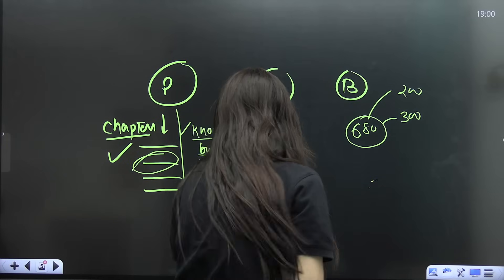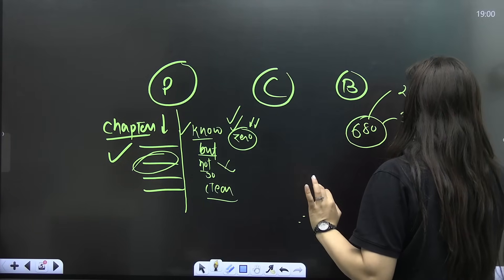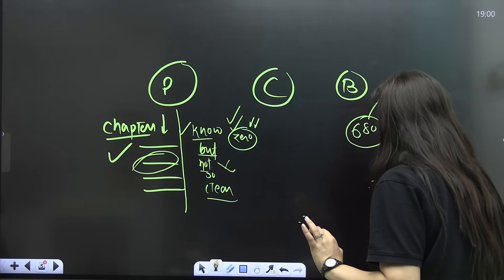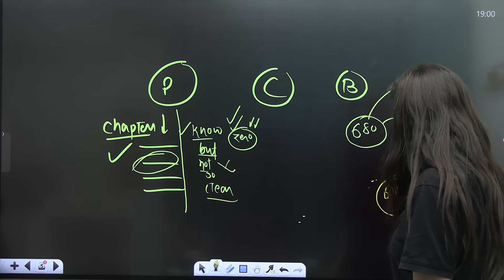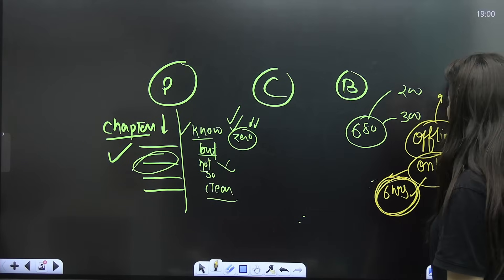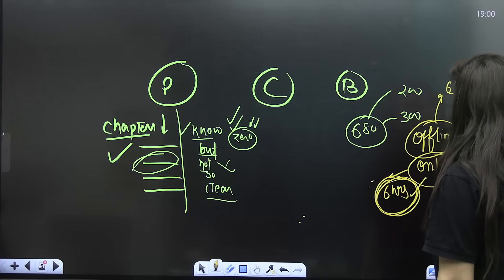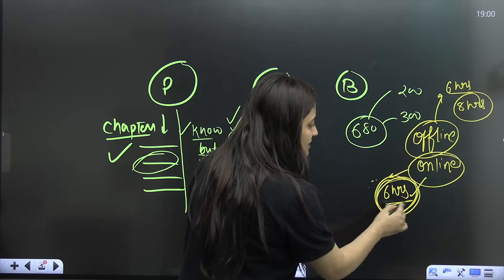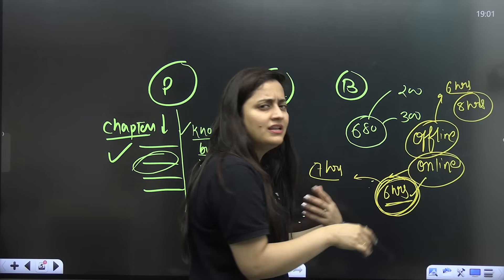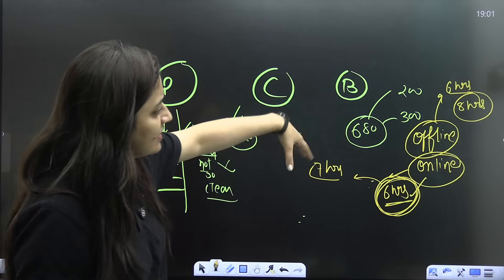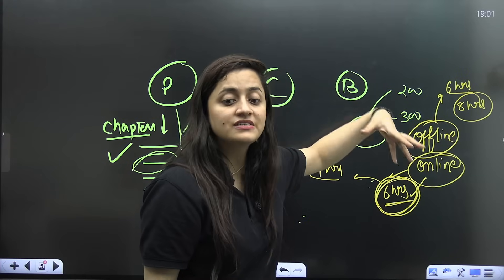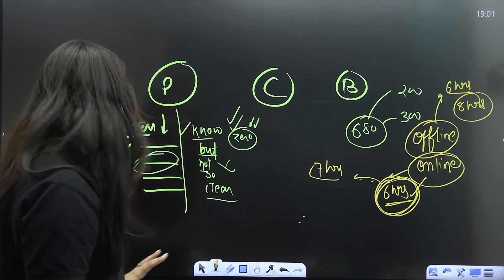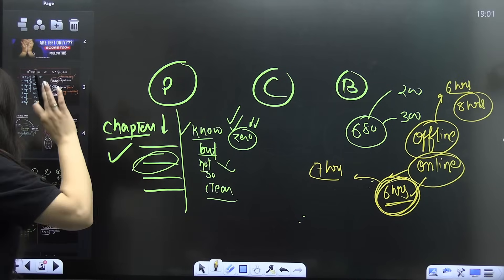If you are going offline or online, your classes will be there for a minimum of six hours. For offline, you take eight hours overall including travel and rest. For online, six hours of classes plus one hour break, and you also need extra hours. You have to devote your time accordingly. This is the first thing to clarify in your mind.